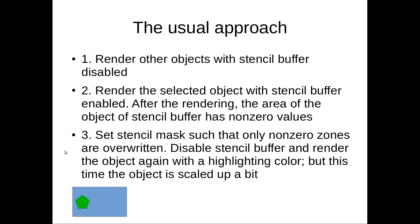So next, you render the selected objects with stencil buffer enabled. For example, the circle is selected. And you enable the stencil buffer so you can see the circle in the stencil buffer like this. So only this circle is enabled.